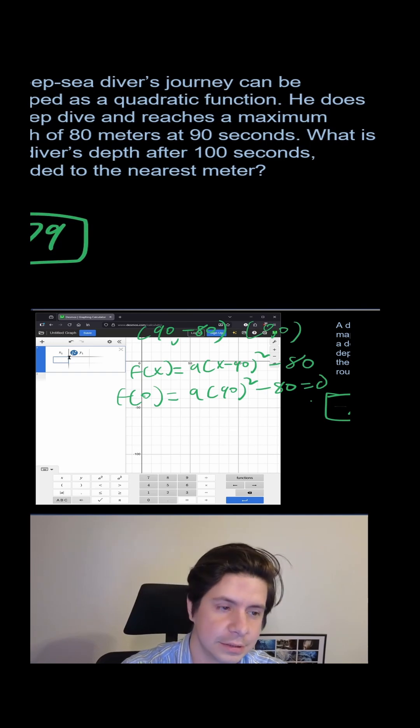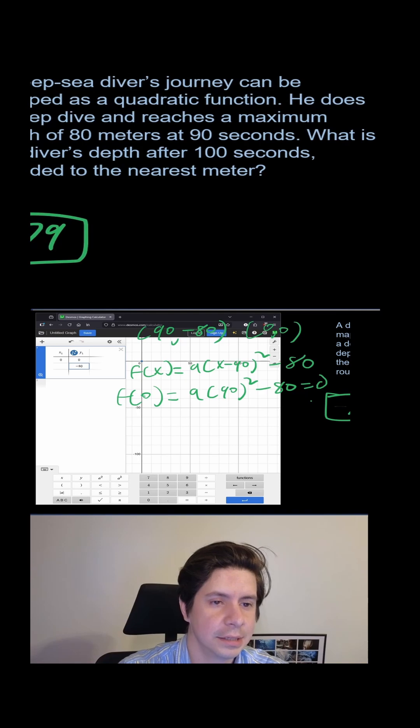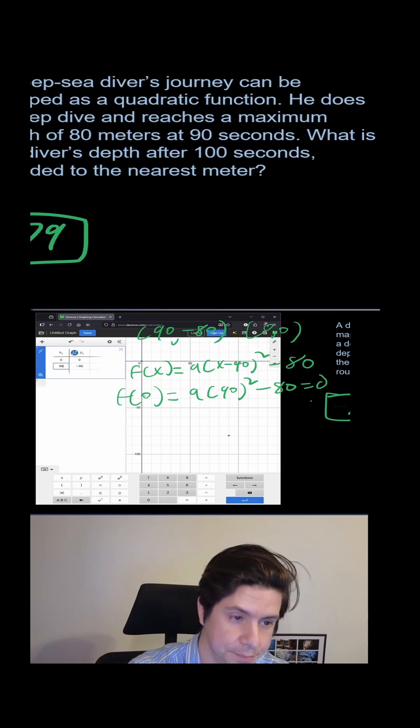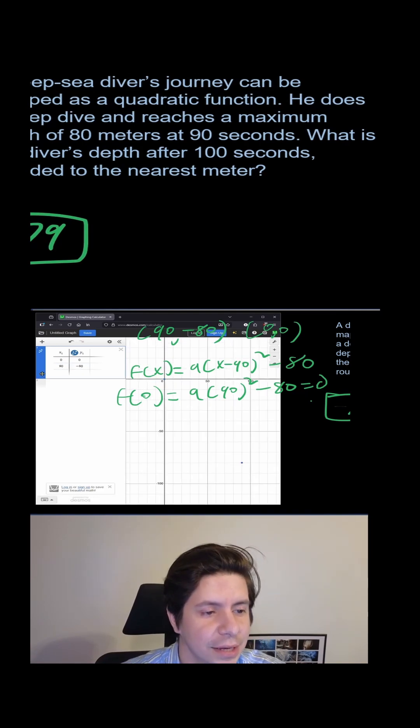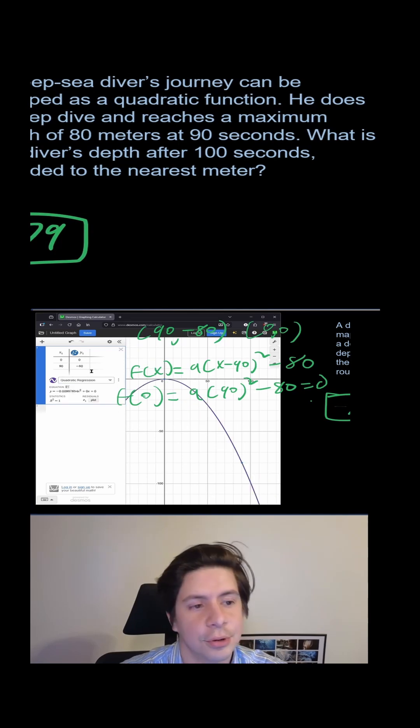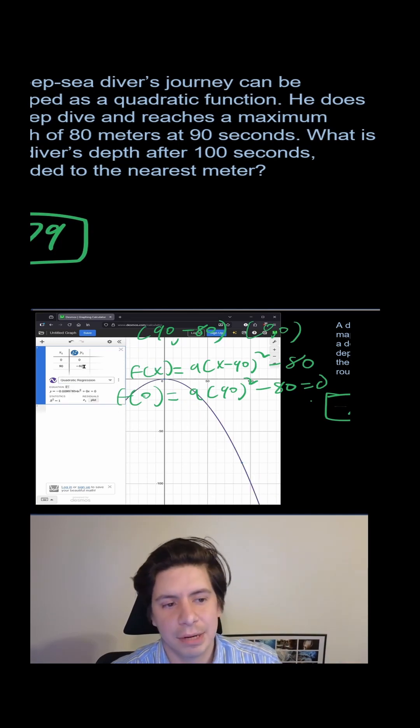So one value we have is zero, zero. And the other value we have is 90, negative 80. Now when you get the equation and we do a quadratic regression, it gives us this, which doesn't look right because they don't know that the 90, negative 80 is the minimum. They just think it's another value. So we have to find another value.